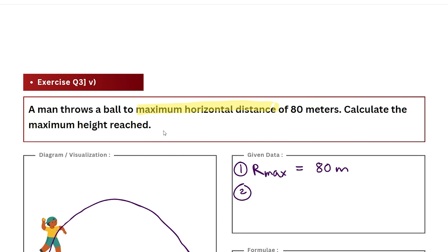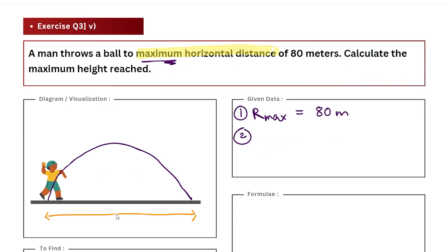Now coming back to our keyword, that is maximum. Since they have said it's the maximum horizontal distance, we can be sure that this projectile is launched at some angle of projection, and because it's the maximum horizontal distance possible, we can say that this angle has to be 45 degrees because it's the condition for achieving maximum range.